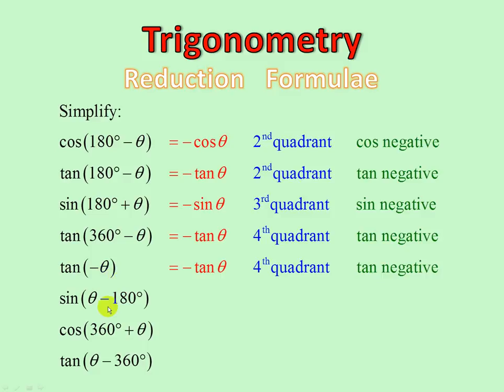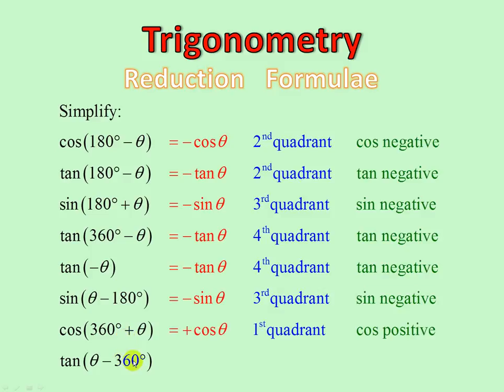Theta minus 180: that's going to put us in the third quadrant — sin negative, therefore negative sin theta. Cos of 360 plus theta: all the way around 360 and on a bit, first quadrant, cos positive, cos theta. Tan of theta minus 360 degrees: go up a bit and then back 360 degrees, that's going to put us in the first quadrant, tan positive, therefore positive tan theta.